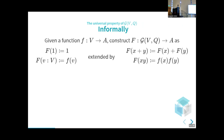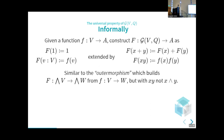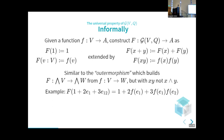Informally, the universal property says that if we have a function from V to some space A, we can construct a function from the Clifford algebra over V to A, by sending one to one, sending all our vectors through our desired lowercase f function, and then just extending linearly and multiplicatively. It's sort of similar to the outomorphism, which sends a linear map from V to W to a linear map between the exterior algebra over V and the exterior algebra over W. But the two differences here are we're using the geometric product not the wedge product, and instead of going into the exterior algebra, we're going into any algebra we like — so A here is an algebra.